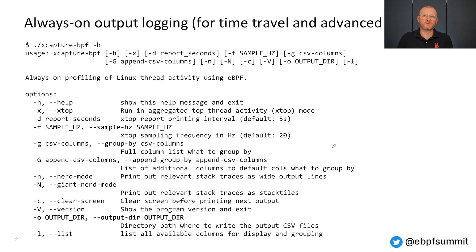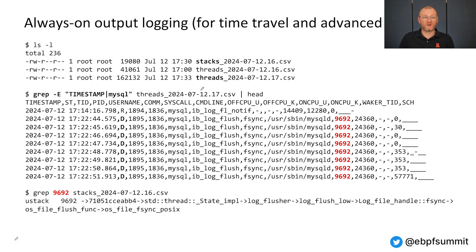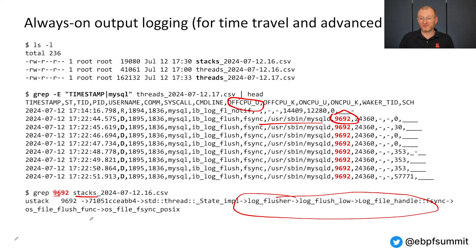We still get a reasonable overview of the entire system demand — not only utilization but demand — and you can also zoom into a specific thread only if you want. You can have an always-on mode as well: it creates a threads file for every hour for the active threads of interest, and a separate file for stack traces. So if you want to go back in time to see what was going on, you can see that a lot of threads were waiting in this off-CPU user mode stack, then go to the stacks file and grep for that to see exactly why a thread went to sleep back then.